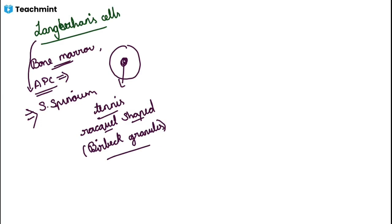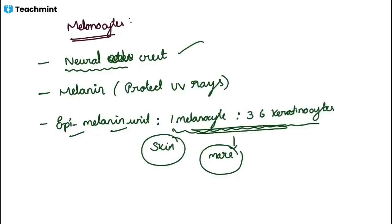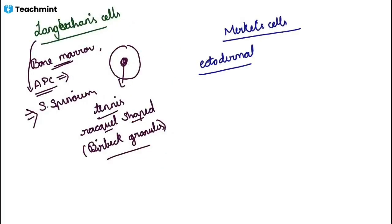Next comes the Merkel cell. This cell is of ectodermal origin — while melanocytes are of neural crest origin, the Merkel cell is ectodermal in origin. It is a neuroendocrine cell.